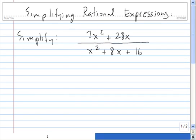In order to simplify this, let's start by factoring the numerator. The greatest common factor of 7x squared plus 28x is 7x, so let's factor that out.